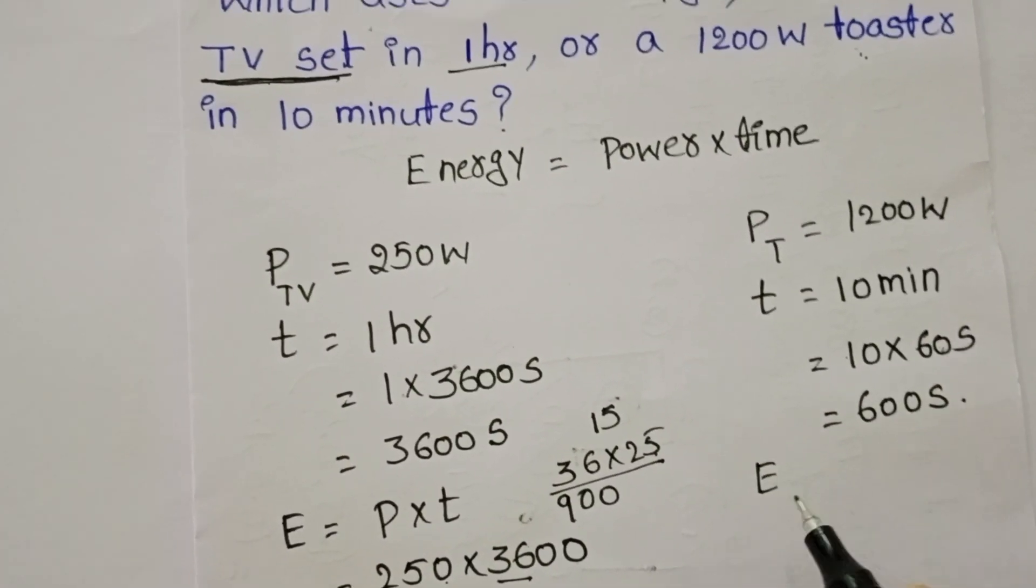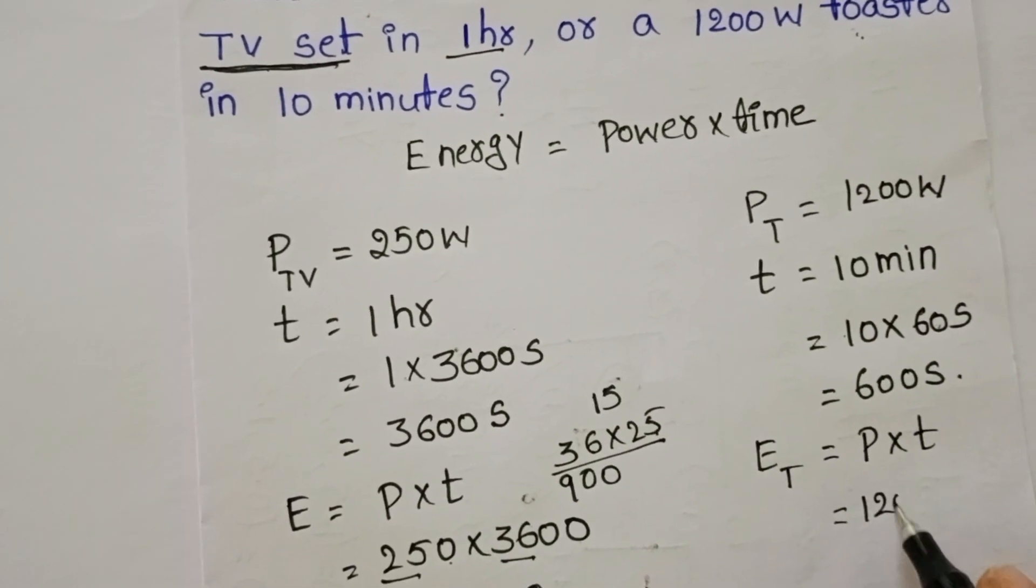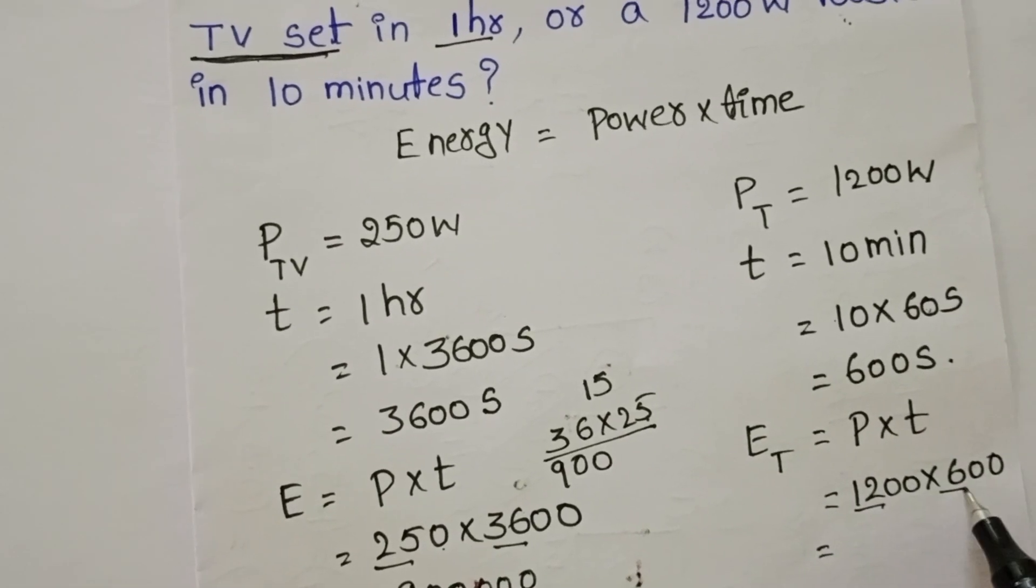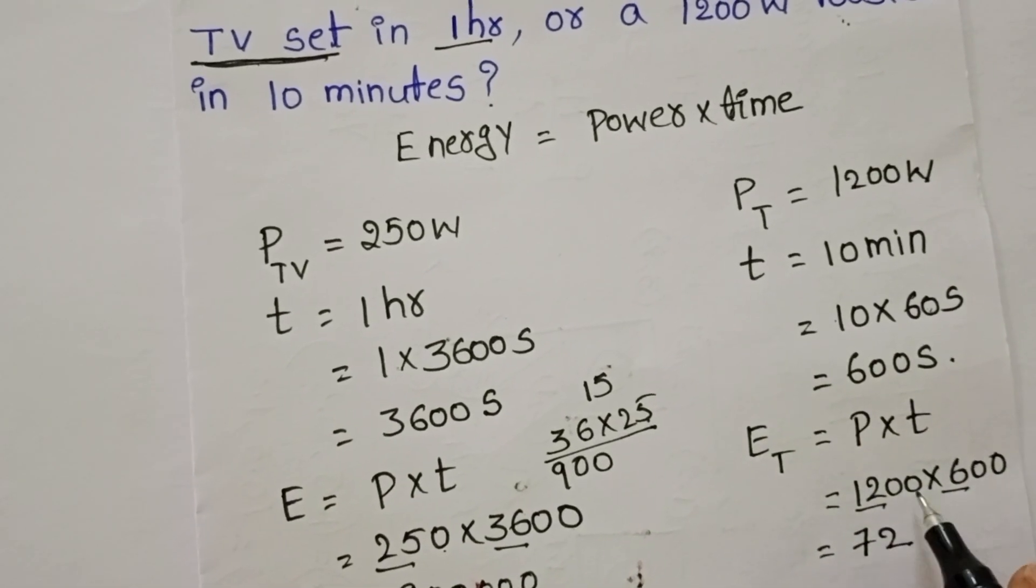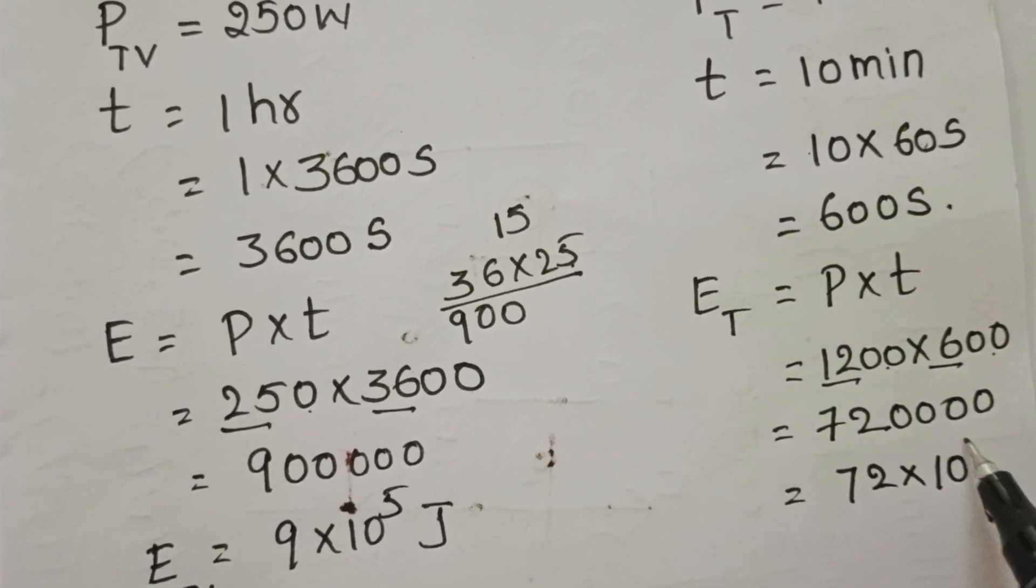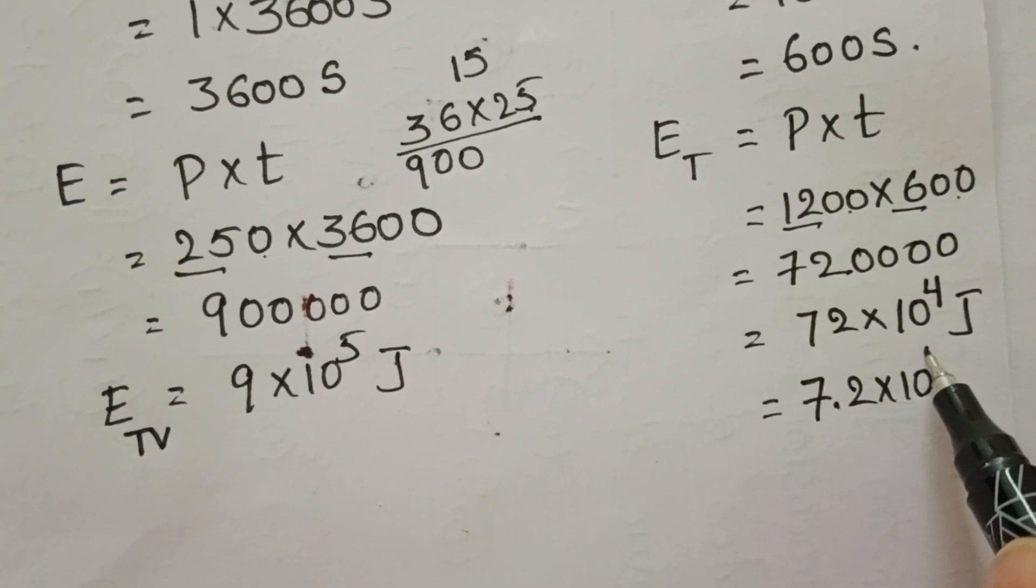Take the energy formula: power into time. Power is 1200 Watt and time is 600 seconds. 12 into 6 is 72, and here 4 zeros. 72 into 10 power 4, or 7.2 into 10 power 5.